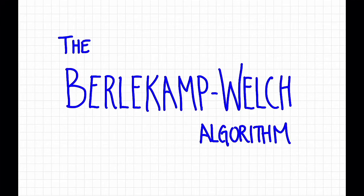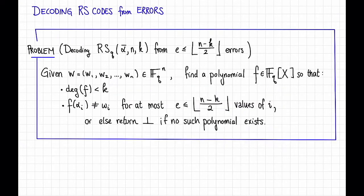In this video, we'll take a look at one algorithm for decoding Reed-Solomon codes, known as the Berlekamp-Welch algorithm. First, what is the problem we are trying to solve? The problem is decoding Reed-Solomon codes from errors.